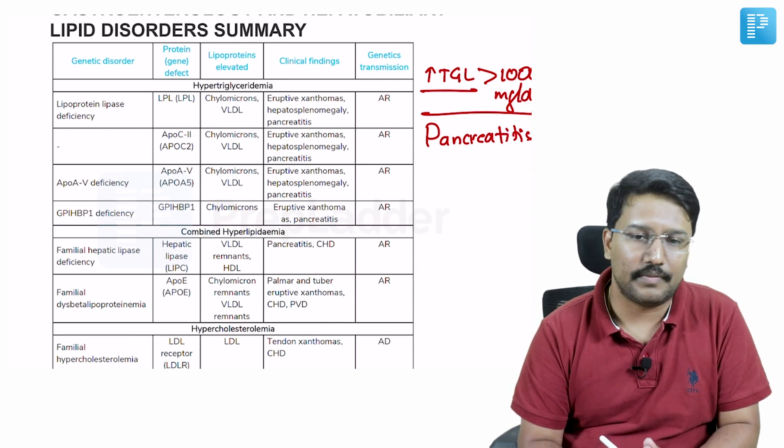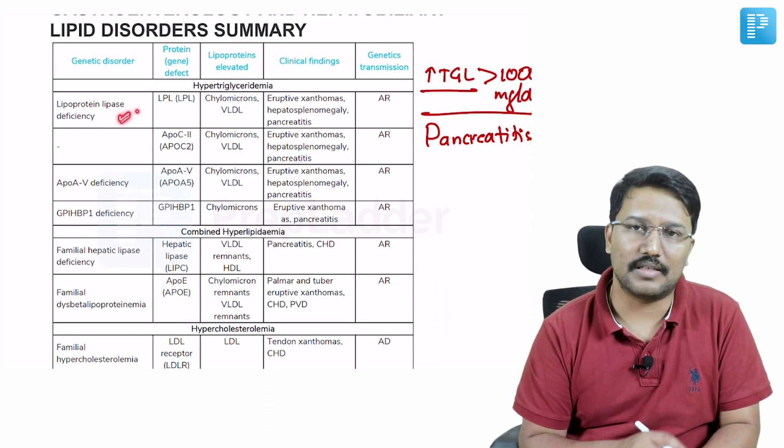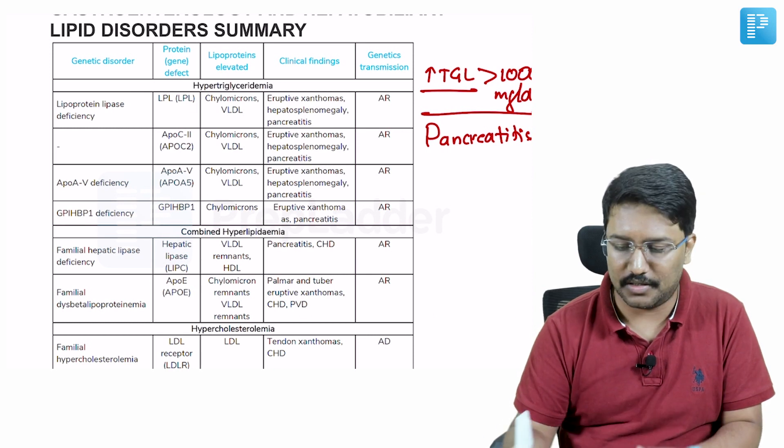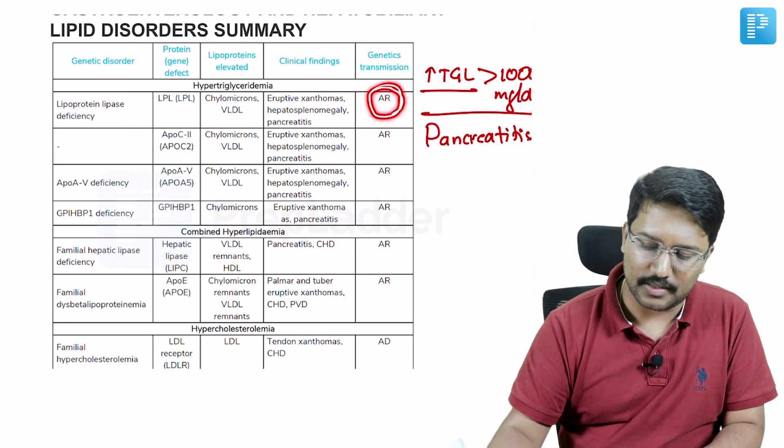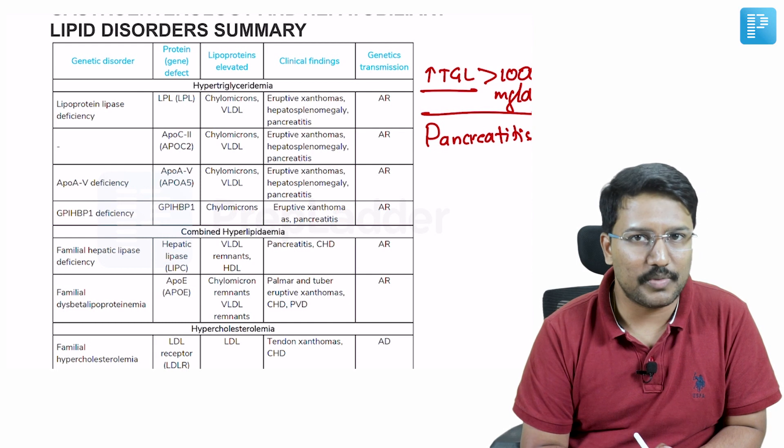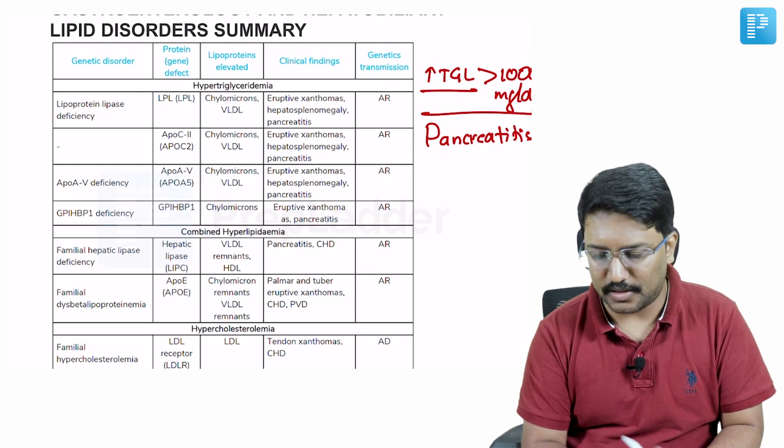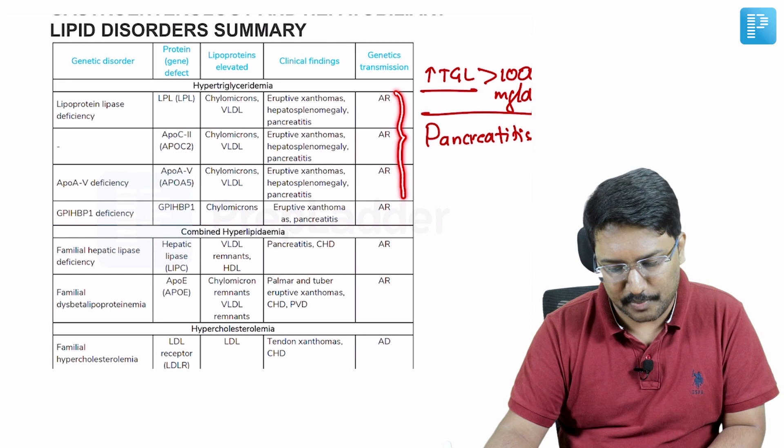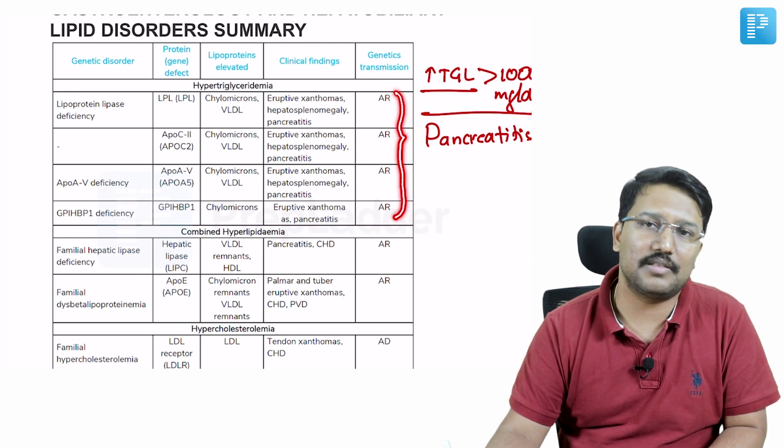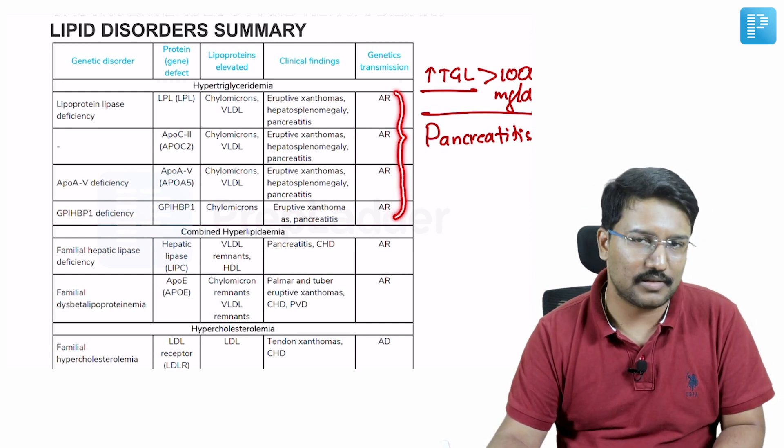If the examiner wants to know whether lipoprotein lipase deficiency is inherited as autosomal recessive or dominant, from this treasure you get to know that it is inherited as autosomal recessive. And as you look through the table, you also notice that